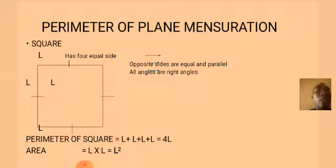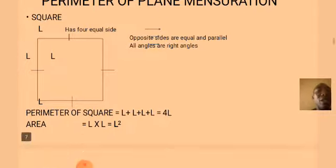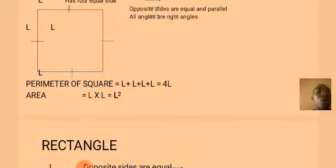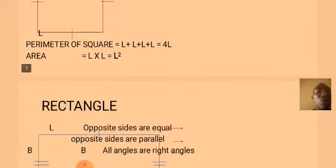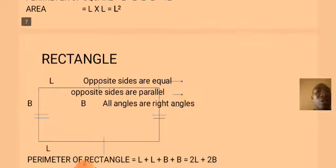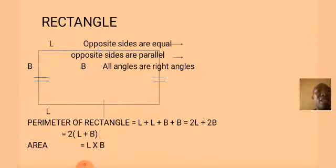Let's look at another shape: rectangle. What are the properties of a rectangle? Opposite sides are equal. Opposite sides are also parallel. All angles are right angles. The longest side of the rectangle is called length, and the shortest side is called breadth. The longest side is represented with letter L and the shortest side is represented with letter B. The perimeter of a rectangle is L plus L plus B plus B, which gives us 2L plus 2B, or 2(L plus B). The area is equal to length multiplied by breadth.